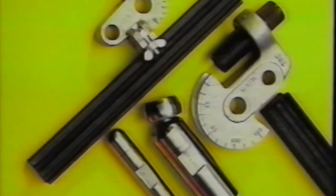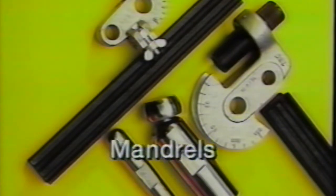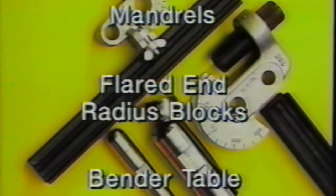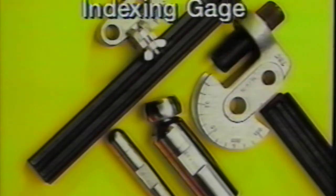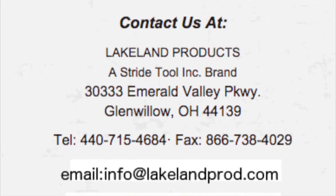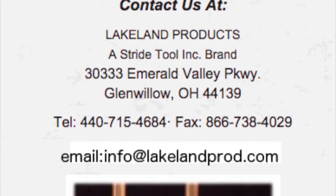In addition to Lakeland's 416 bender, a number of accessories is available to make tube bending even easier. A selection of mandrels, flared end radius blocks, a bender table and a band angle indexing gauge are readily available for use with all bender machines. For quality, dependability, and versatility, Lakeland products is the right choice for your tube bending needs.